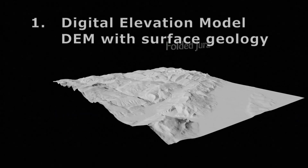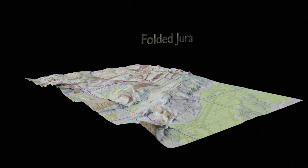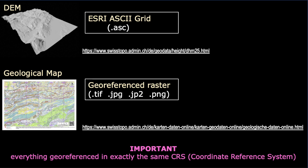Let's start with displaying the geological outcrop situation onto a DEM with 25-meter spatial resolution. The data you need is a DEM in ESRI ASCII grid format and a georeferenced raster holding the geological surface information in any of the indicated formats. You may use your own data or download datasets from SwissTopo with the links given below. Very importantly, all data must be in the same coordinate reference system.